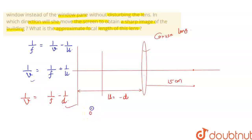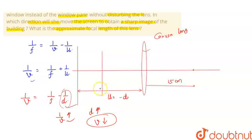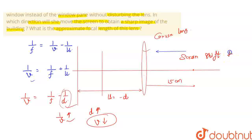So here, if I increase distance D, then this value will be reduced. So here 1/v will be positive and the value will be reduced. We can see that if it shifts the screen in the direction of the lens, it will get a sharp image.